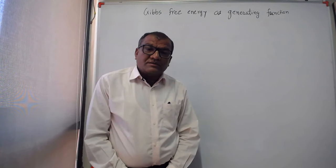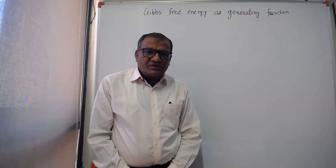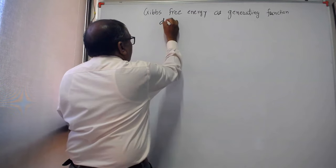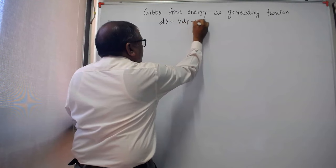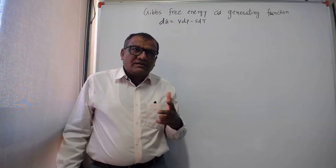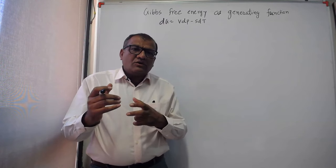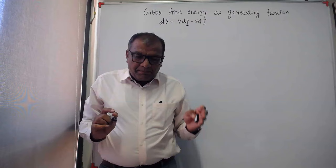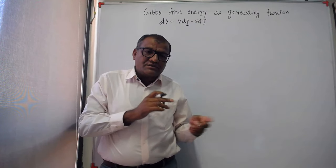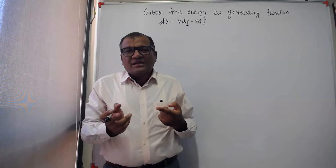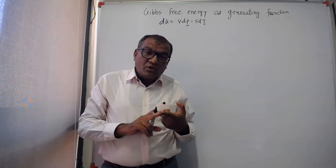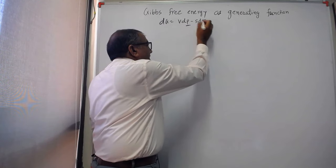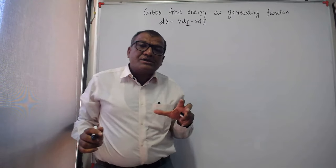In this video, we are going to discuss Gibbs free energy as a generating function. We know four fundamental property relations. Out of those four relations, one is Vdp minus sdT. This equation indicates that Gibbs free energy is a function of two canonical variables P and T — pressure and temperature. If we compare this equation with the other three fundamental relations, all those include entropy or volume as canonical variables. But dg is a function of P and T, and pressure and temperature are easy to measure.